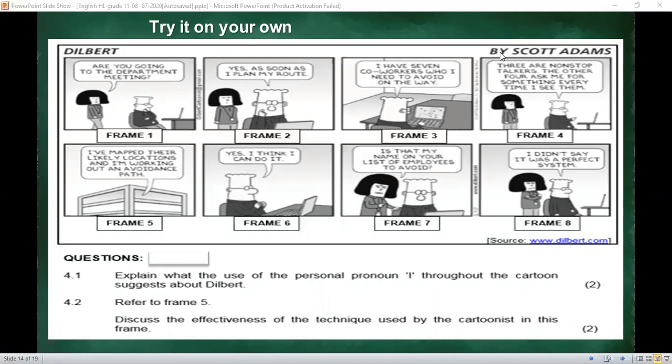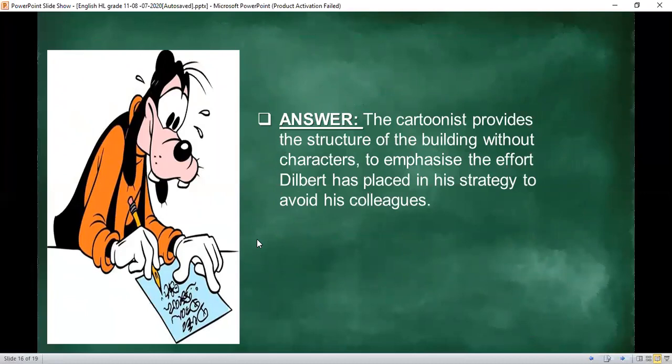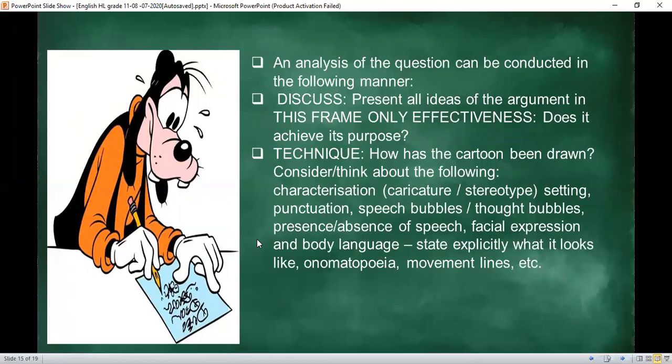There's no person there, just Dilbert speaking. Discuss the effectiveness of the technique used by the cartoonist in this frame. It shows how determined Dilbert is in avoiding his co-workers. The cartoonist provides the structure of the building without characters to emphasize the effort Dilbert has placed in the strategy to avoid his colleagues. This is important when analyzing or attacking questions.